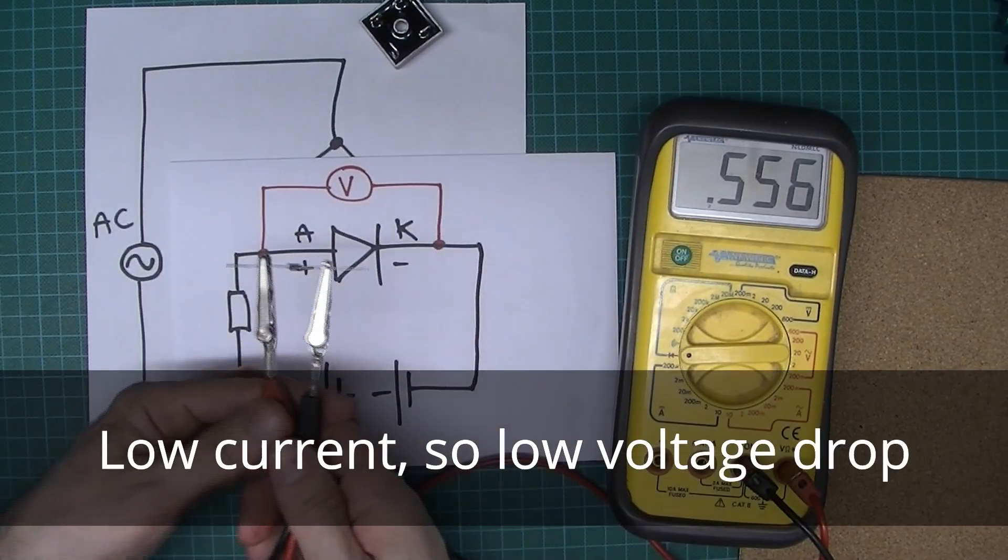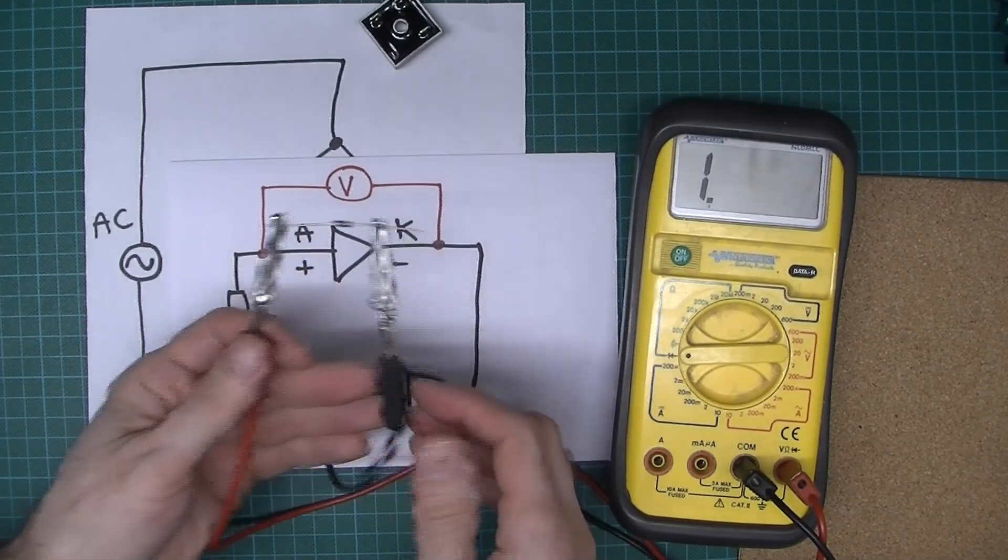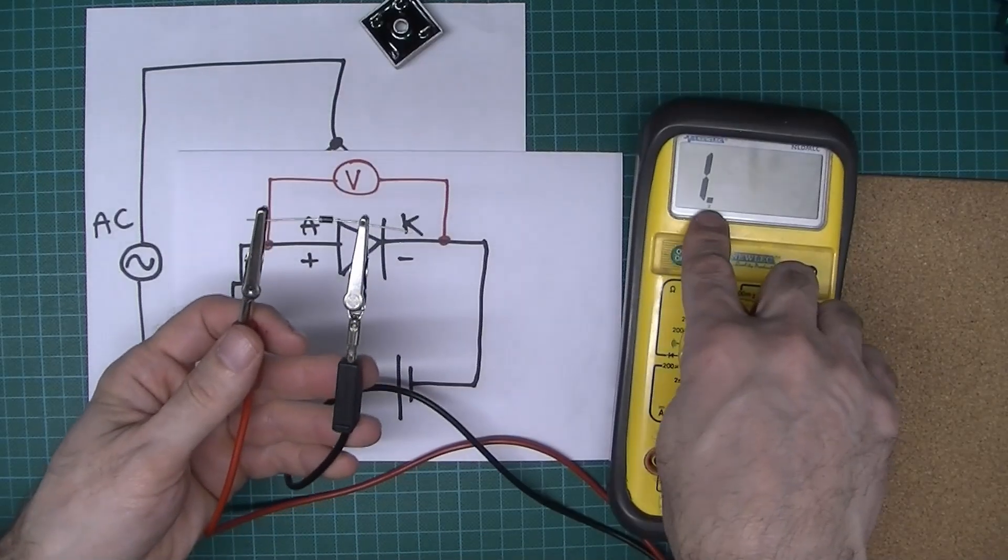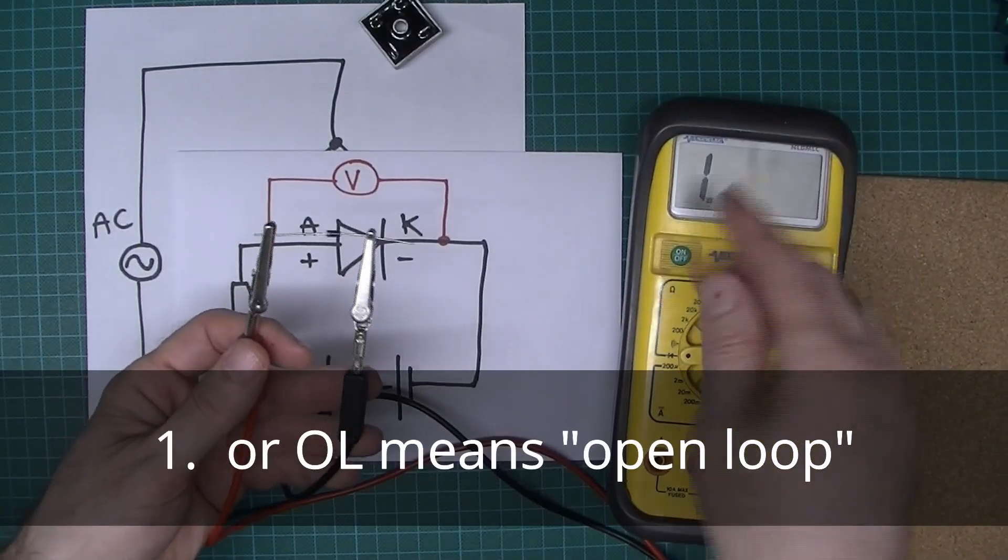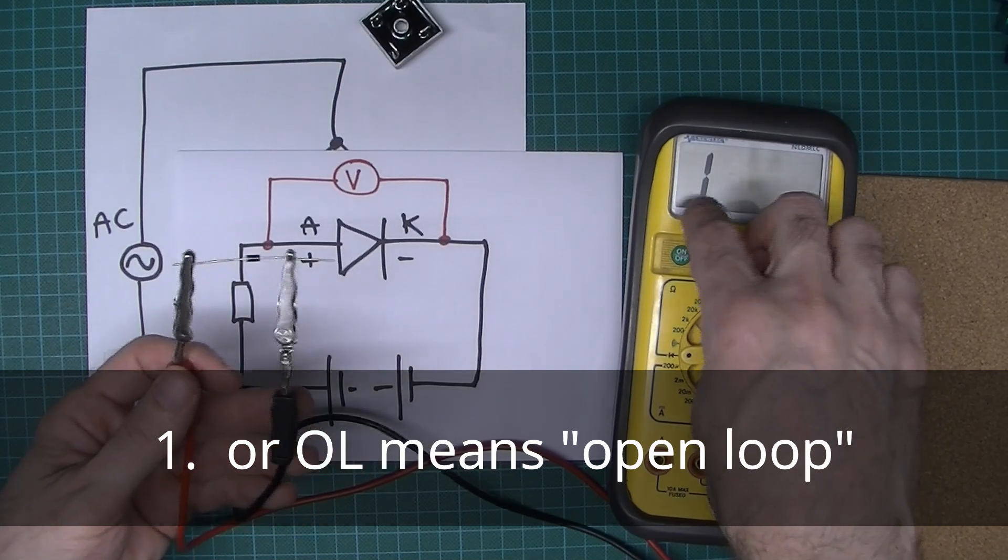So let's reverse bias it. Sure enough, it's, well the one doesn't mean an actual value, it just means it's out of limits, beyond range, which is what you expect because like I said earlier, it's like an open circuit.